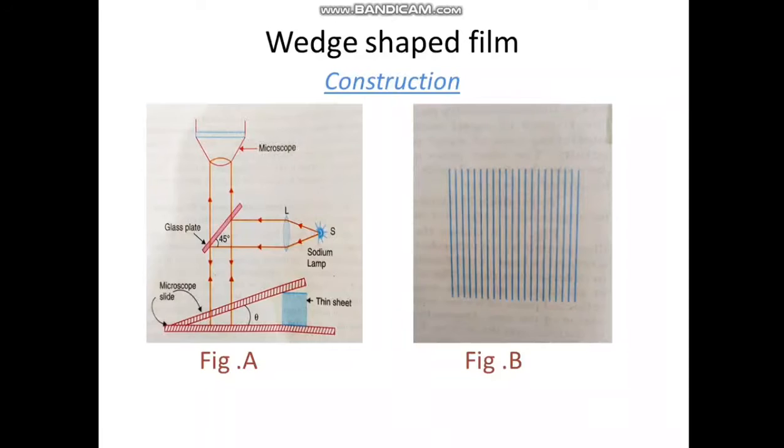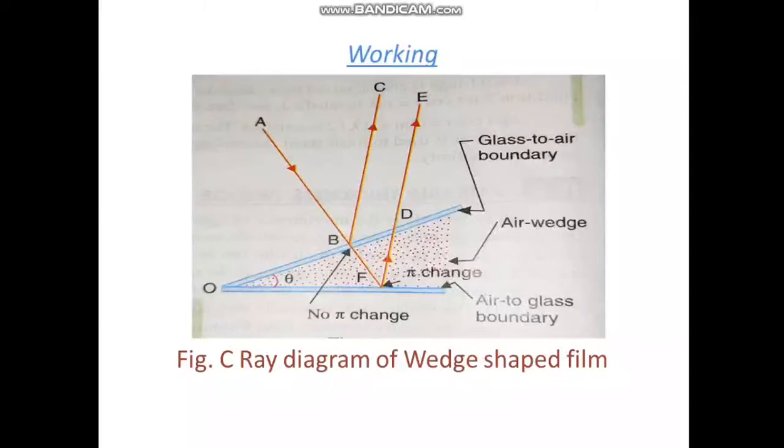alternate bright and dark fringes are observed on its top surface. This phenomenon is given in figure B. The fringes are localized at the top surface of the film.